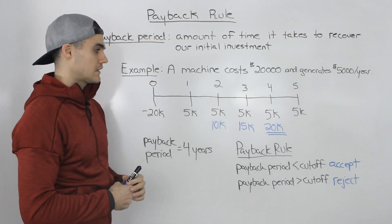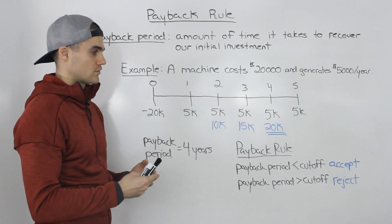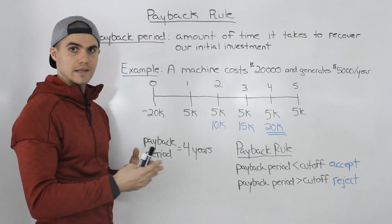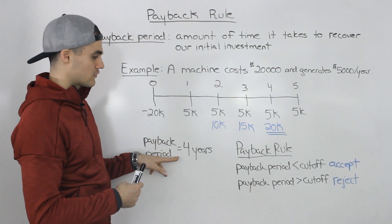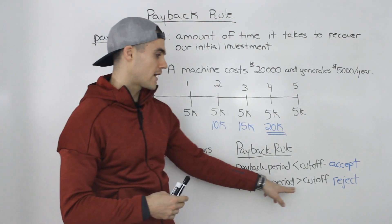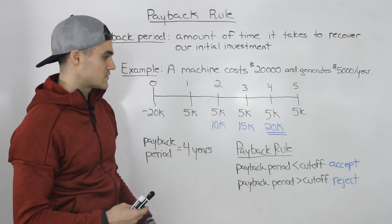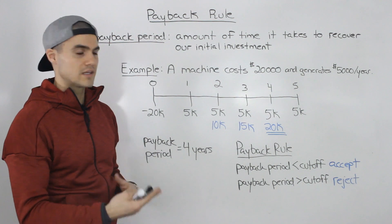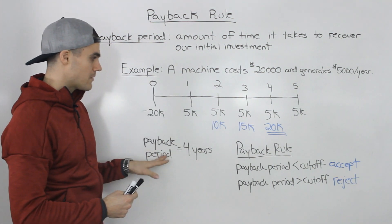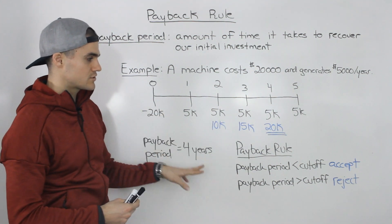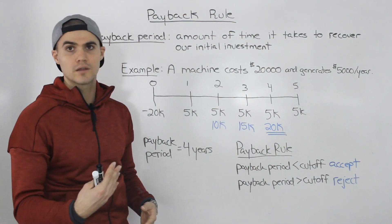Now if the company had a cutoff of three years, we would reject this project because we recover the investment in four years, which is greater than the cutoff of three years. So all we do is take the cutoff given in the question, compare the payback period of the project to that cutoff, and if it's less we accept; if it's greater we reject.